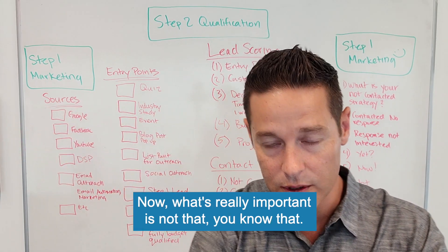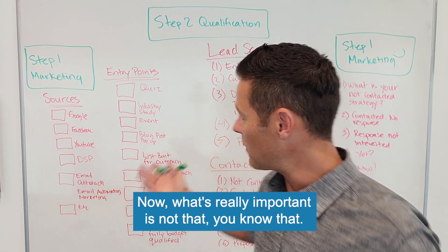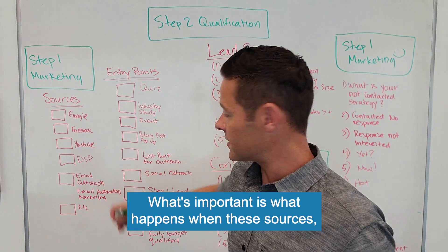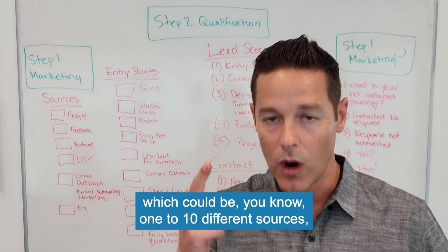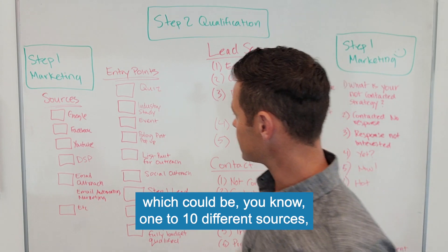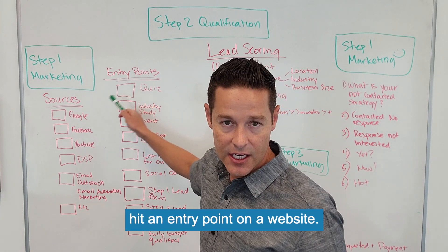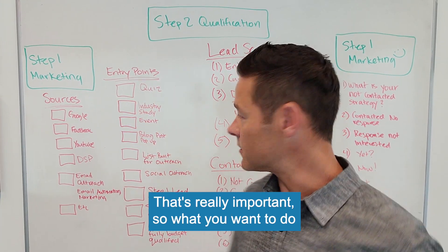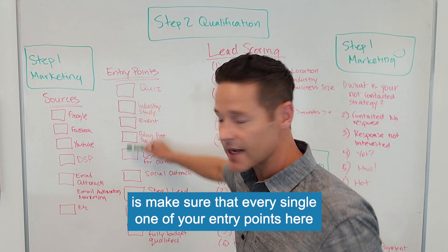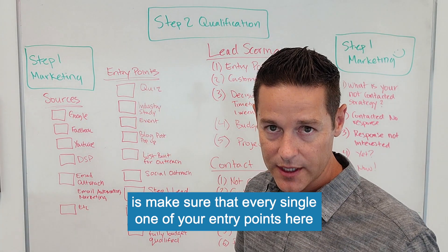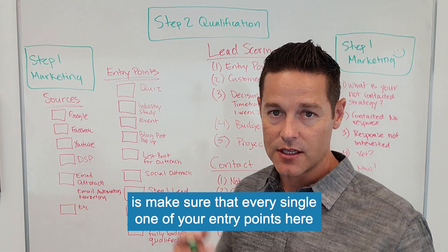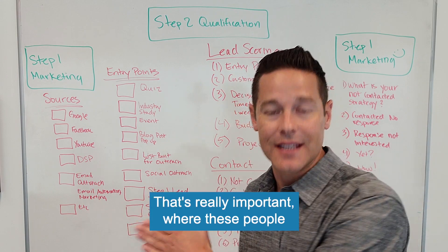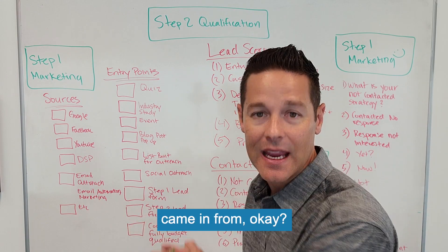What's really important is not just knowing those sources, but what happens when these sources — which could be one to ten different sources — hit an entry point on a website. You want to make sure that every single one of your entry points is marked inside of your CRM. That's really important — where these people came in from.